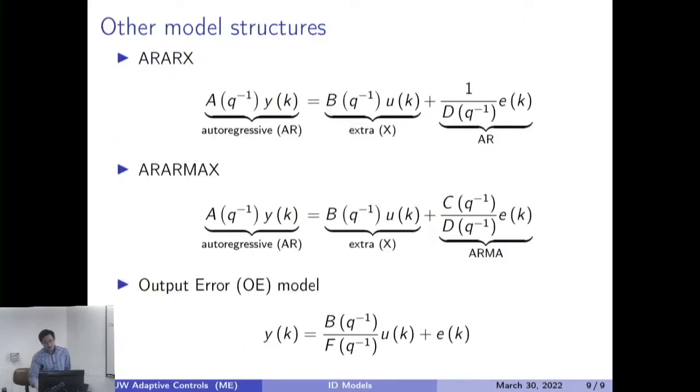And finally, using, there are just these combinations, permutations you can make. So, there can be AR, ARX, which is autoregressive with extra input. And then, there can be ARARMAX, which is autoregressive plus moving average on the noise term with an additional extra input.